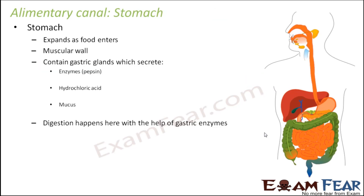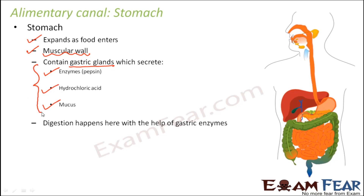The stomach is like a bag capable of expansion. When there is nothing inside it is like a small pouch, but as you start eating food it keeps expanding to accommodate the food particles. This expansion is possible due to the presence of the muscular walls of the stomach. Inside the stomach there are specific enzymes that help in the process of digestion, and these enzymes are produced by glands called gastric glands.